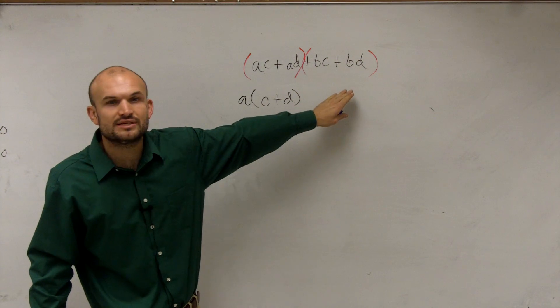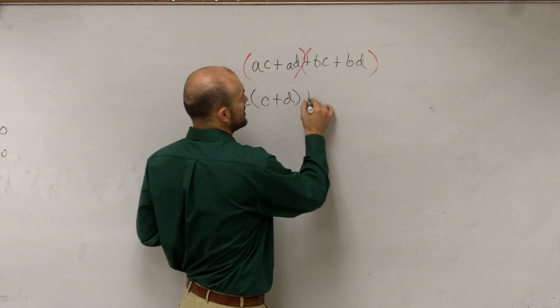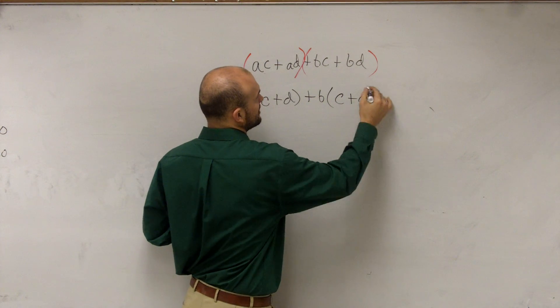Then we look at the next term and I say, what do these two share that I can factor out? Well, they both share a B. So I can factor out a positive B, and that's going to leave me with C plus D.